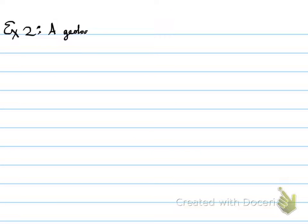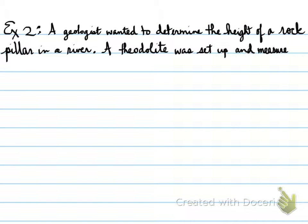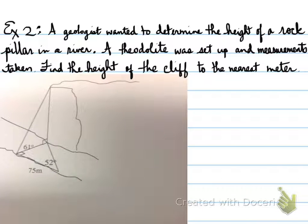Here we go. A geologist wanted to determine the height of a rock pillar in a river. A theodolite was set up and measurements taken. Find the height of the cliff to the nearest meter. The theodolite is measured along here, with one part of the instrument here and the other part here, at a 75-meter distance from each other. This is the flat along the river. This up here is the cliff that you're looking at.